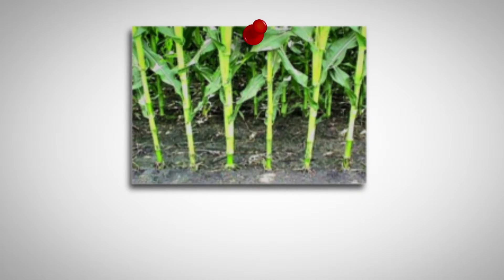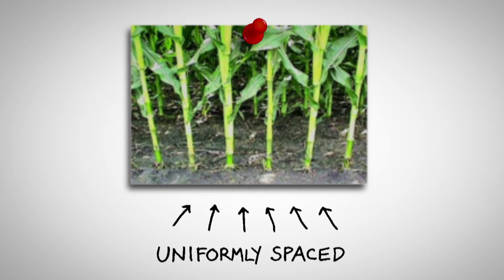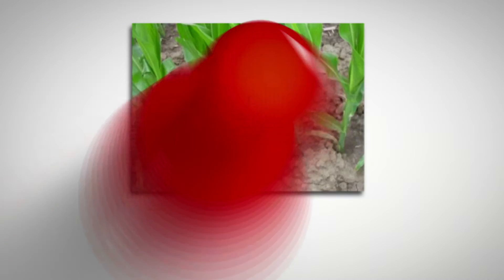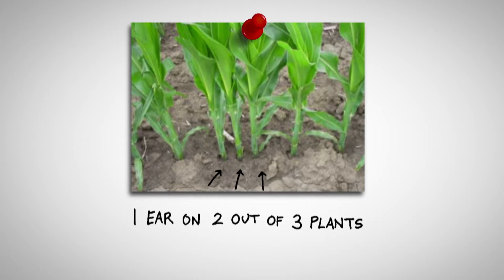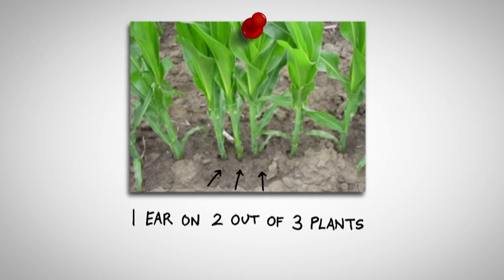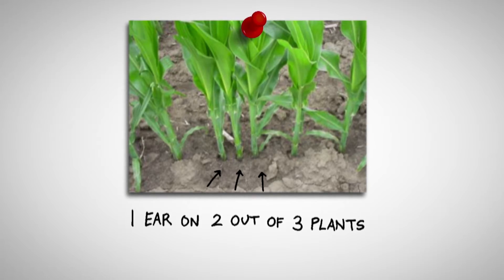Here are a couple of quick pictures. Here's what we're after — we really like to have some nice, uniformly spaced plants within the field. We want to avoid clustered spacing. Odds are good we're going to get an ear out of two out of those three plants, but will they be the ideal ear that we'd really like to have? Did we just spend money we didn't need to spend in that situation?